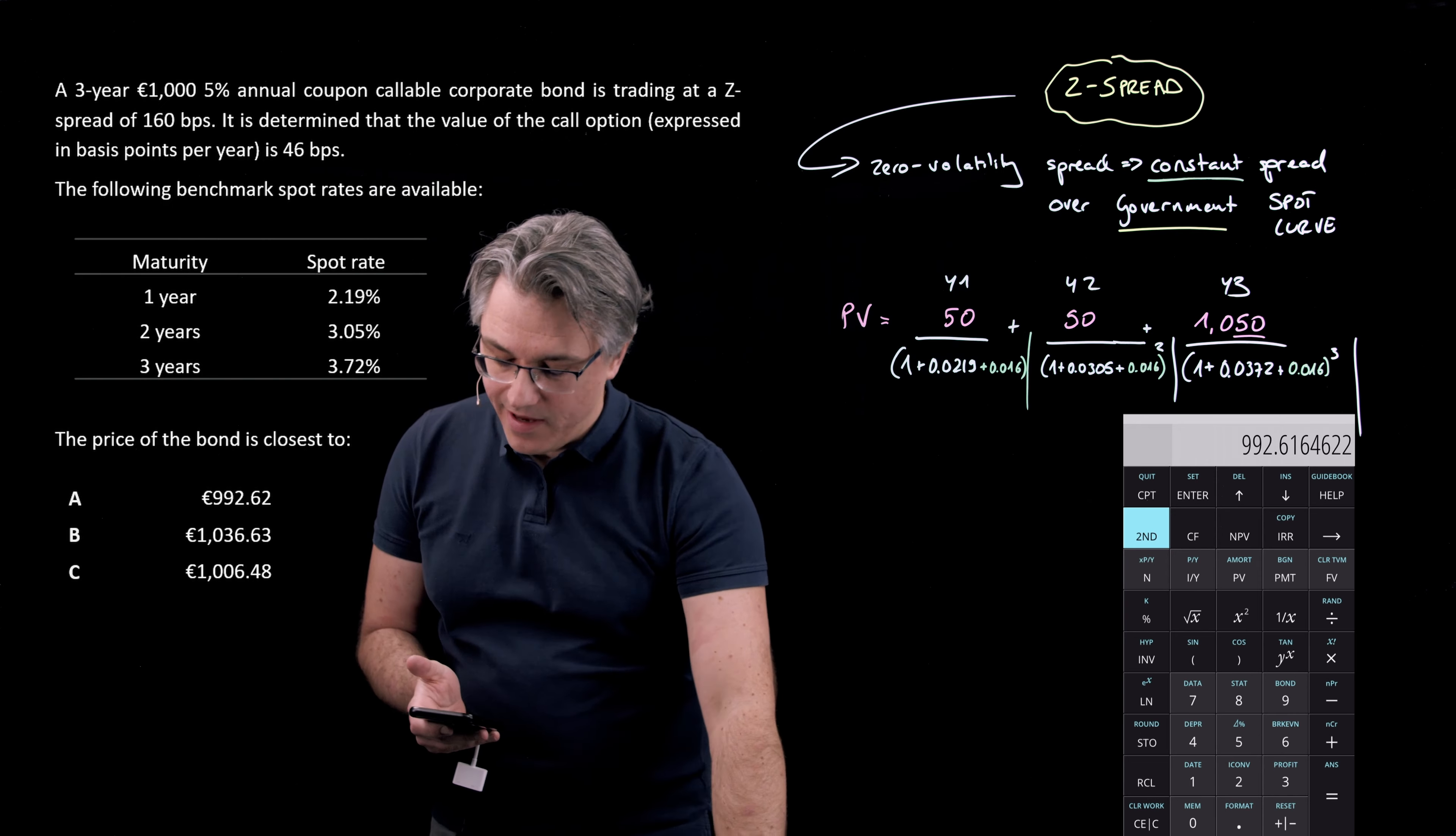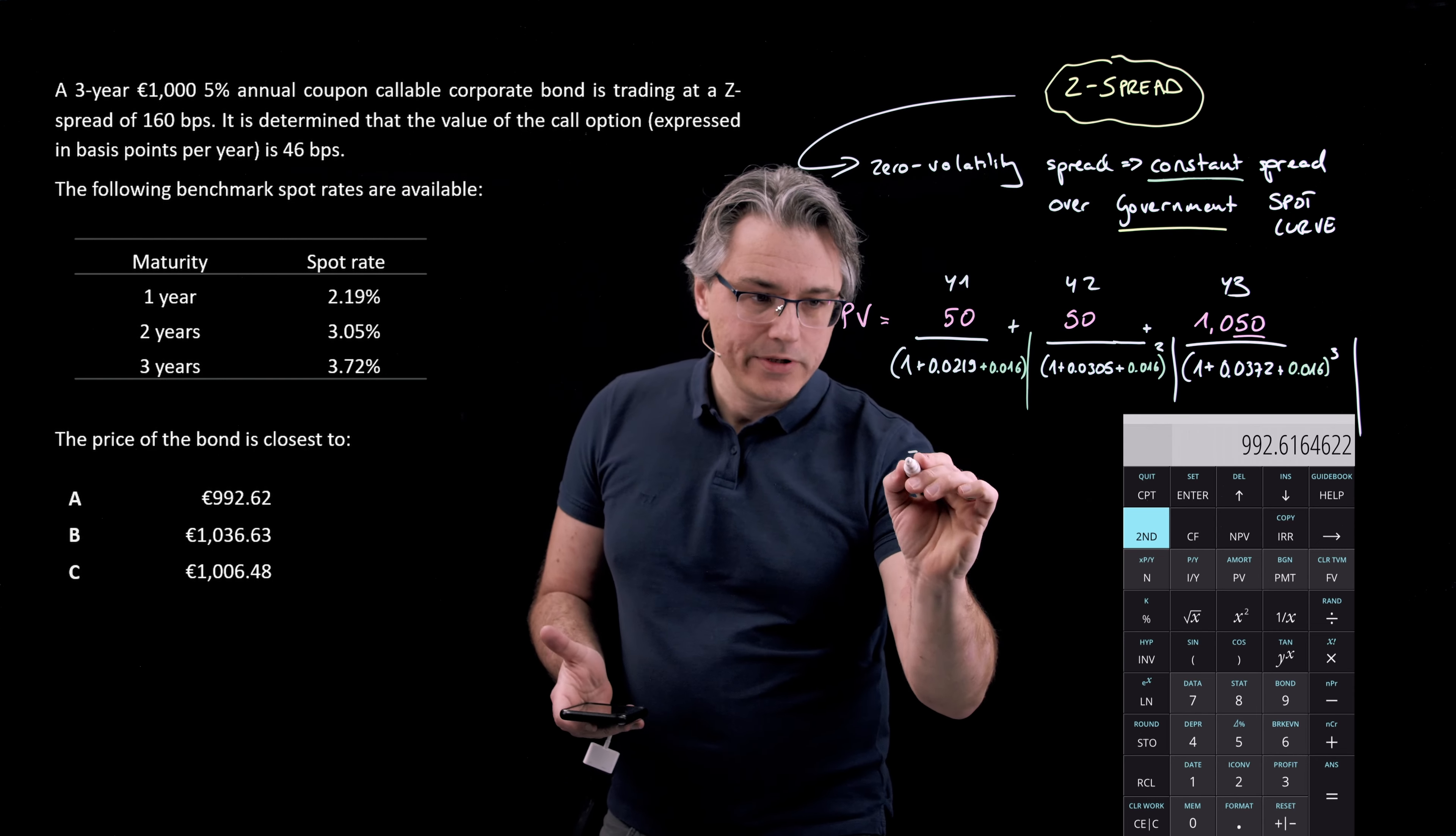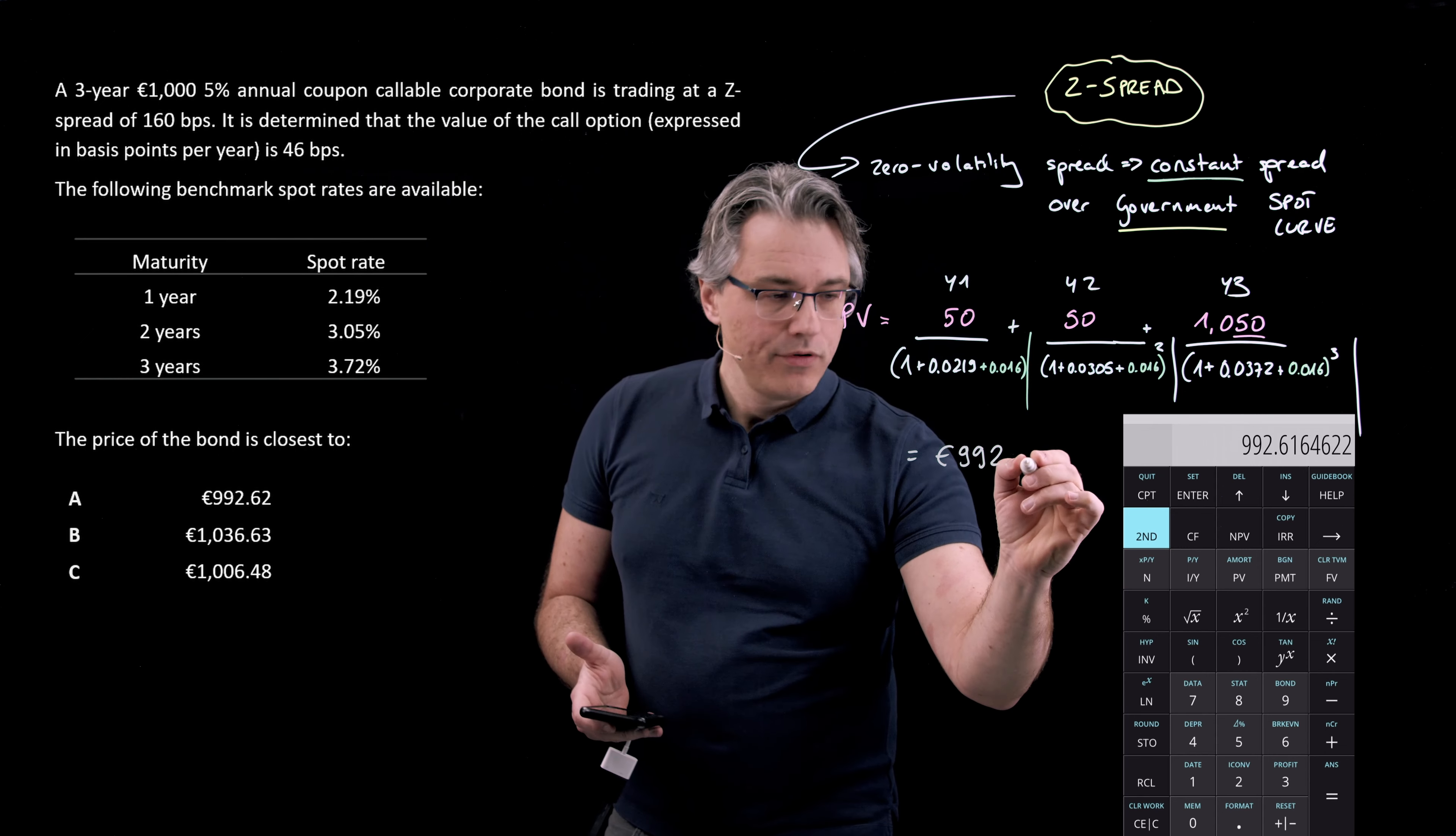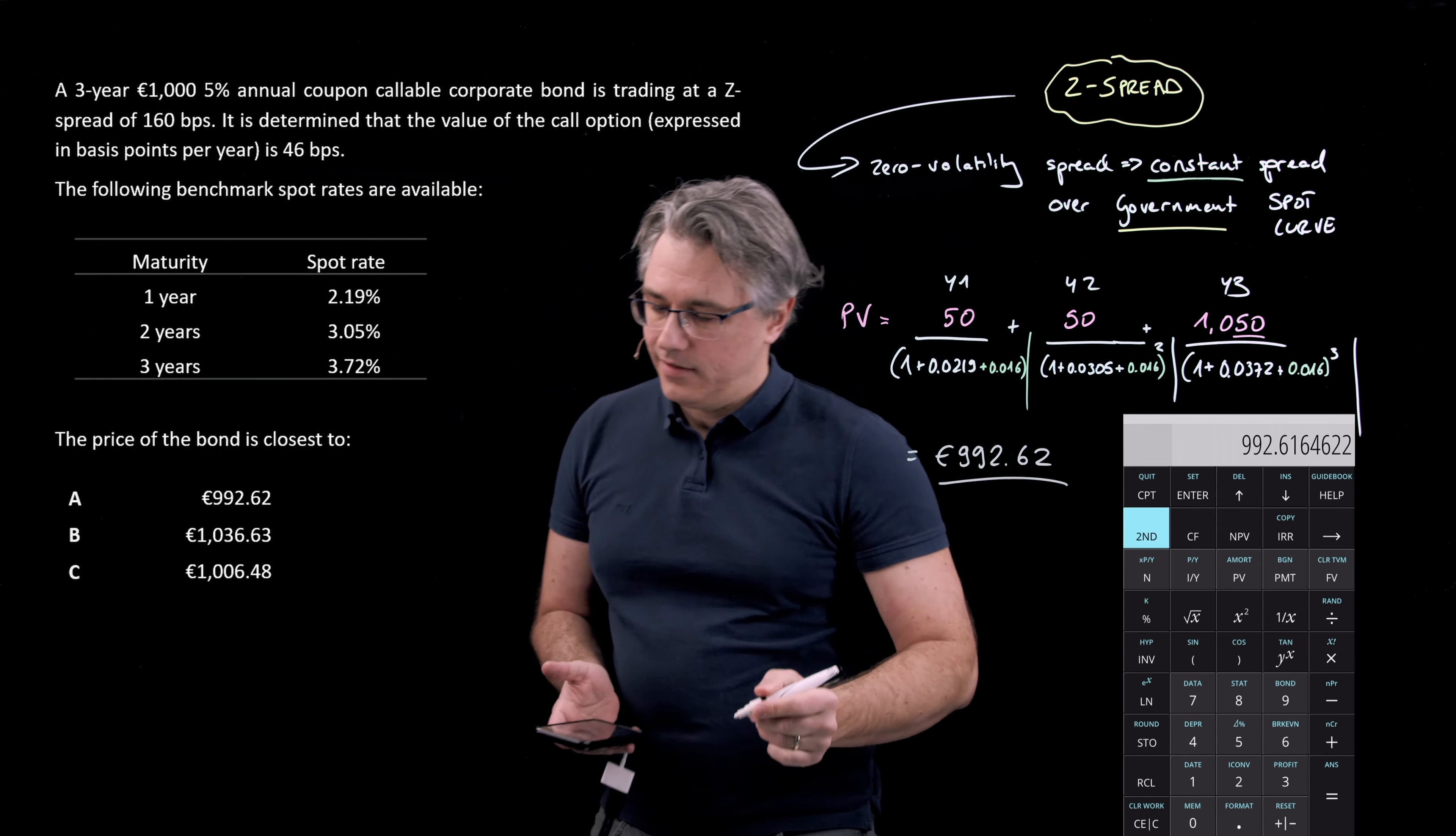Yes, my calculator shows me 992.616, which I guess we can round to 992.62. And if we check back against the answers, or potential answers, this corresponds very nicely with answer A. And this is the solution to the Z-spread question.